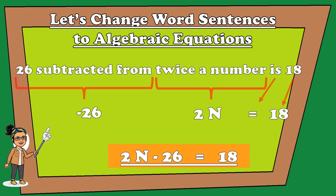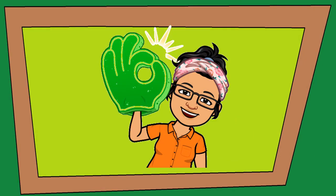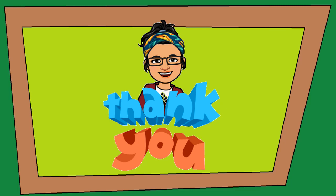Can you give me the constant terms in this equation? 26 and 18 are our constants. Our variable is N. And how do we call 2 that goes with our variable N? 2 is called a coefficient. You did awesome work today, kids! Time to answer your modules. Thank you for listening. Until next time.